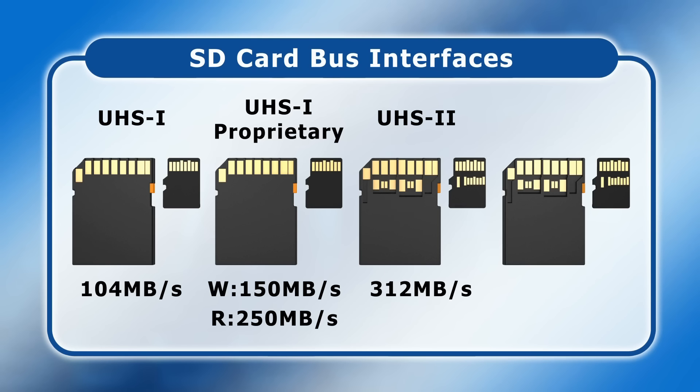Back with the official standards, in 2017 the SD Association released a specification for UHS-3, facilitating data transfer at up to 624 megabytes a second using the same extra row of pins as UHS-2. However, at the time of making this video, no camera or recorder has a UHS-3 SD card slot, and no manufacturer has released any UHS-3 media. It's also very unlikely that anybody ever will make any UHS-3 media or hardware.